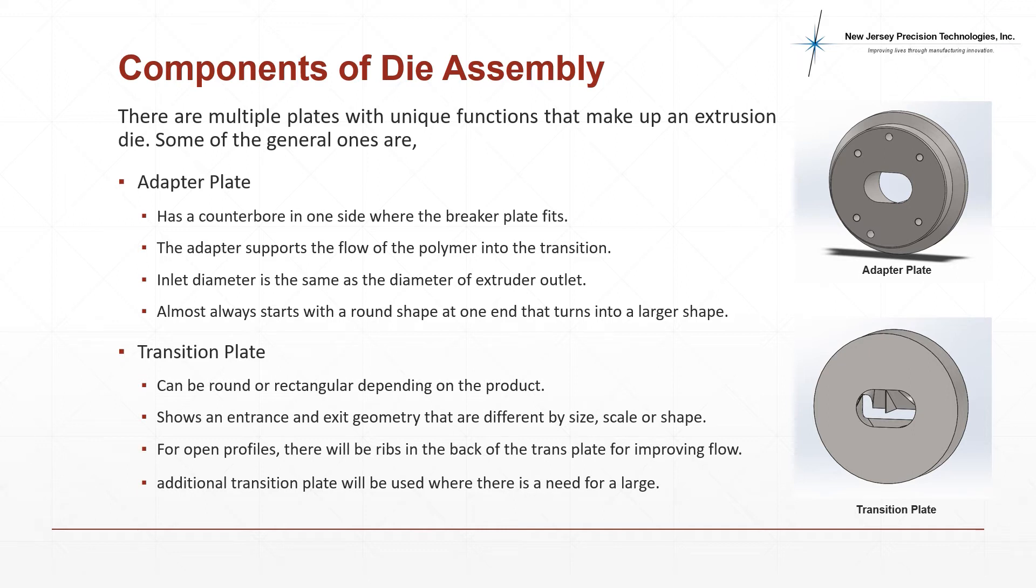The transition plate can be either round or rectangular depending on the geometry of the profile. There can be single or multiple transition plates to allow the polymer melt to flow from the adapter plate into the die plates. The inlet profile of the transition plates can have features called ribs, which help improve the flow of polymer into its desired form. At New Jersey Precision Technologies, the internal profiles for each plate are manufactured using the wire EDM process.